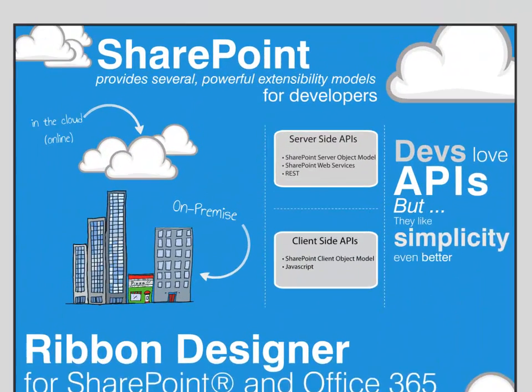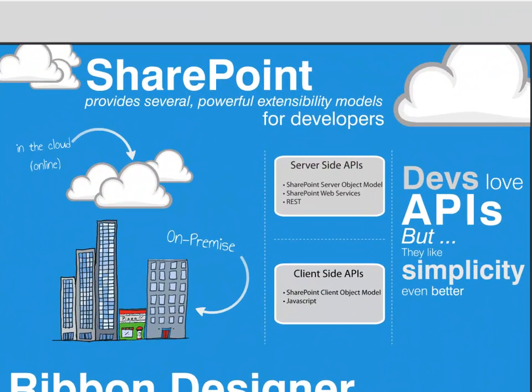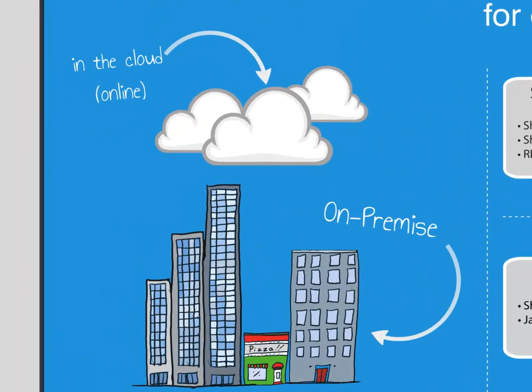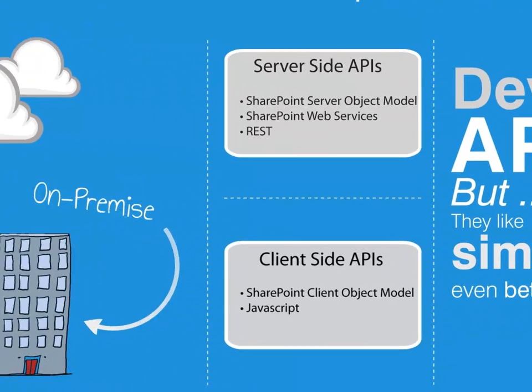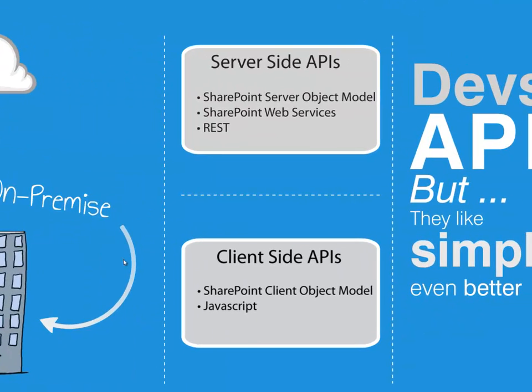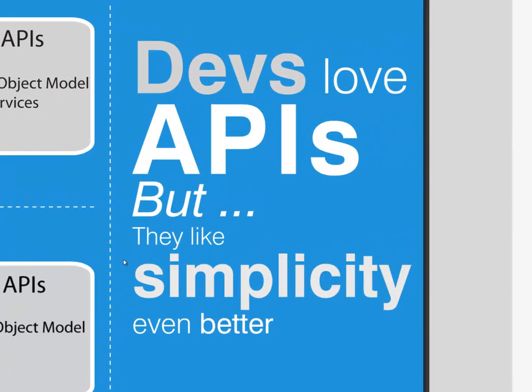Microsoft SharePoint provides several powerful extensibility models for developers. These models work both with SharePoint Online and the on-premise version of SharePoint. These extensibility models are supported by multiple APIs both on the server side and the client side, which gives developers a lot of choices, but what developers love more than APIs is simplicity.